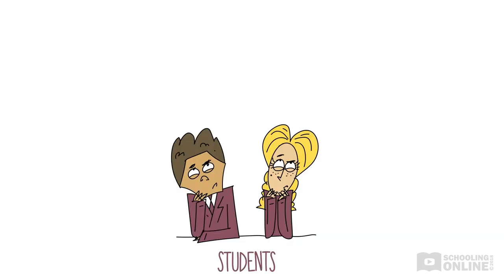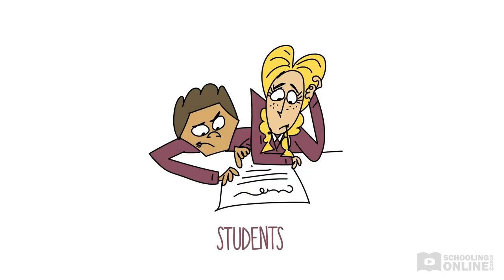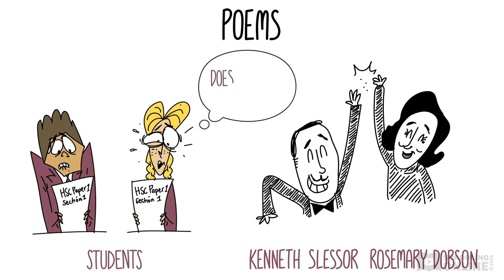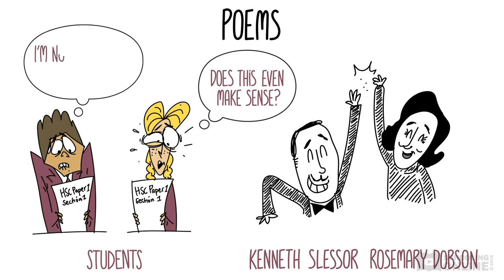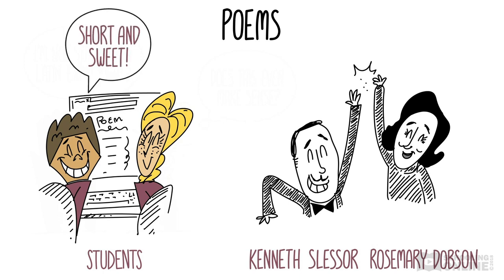Let's go through the different forms and structures that you may encounter in this module. Along the way, we'll highlight a few common techniques associated with each form. First up is poetry. If you're studying poems by Kenneth Slessor or Rosemary Dobson as your set text, then understanding poetry is especially important for you. Even if your set text isn't poetry, you still need to be prepared to explain poems that might appear in your reading comprehension paper. You might also like to find a poem to be your related text.